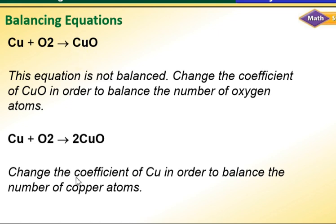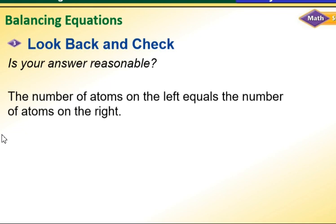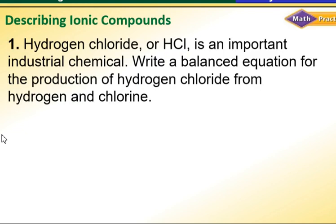Now I'm going to have two atoms of copper, so I'm going to multiply this side by two. I'm going to check if my answer is reasonable. The number of atoms on the left equals the number of atoms on the right.